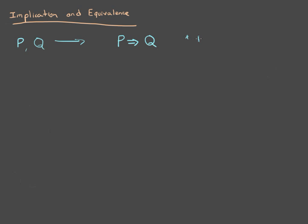We read that as P implies Q. We also read that sometimes as 'if P then Q.' So let's describe what this means. You probably already have a pretty good idea of what it means — it's saying that if P is true, then Q has to be true. So let's define that in terms of a truth table.